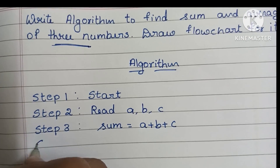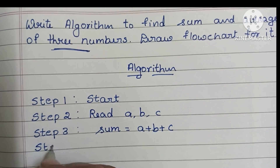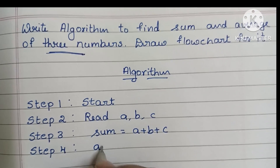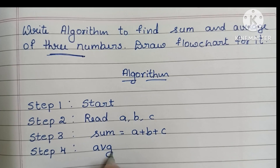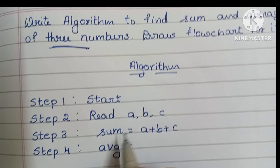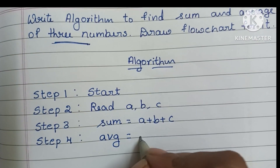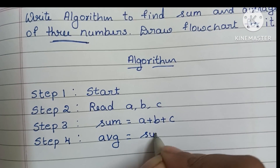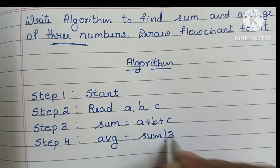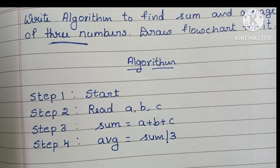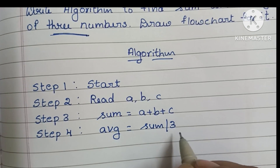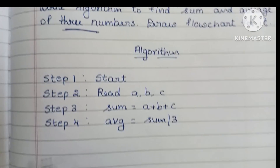In step four, we have to find the average. Average is equal to sum divided by three. This is the formula to find the average of three numbers: average = sum / 3.